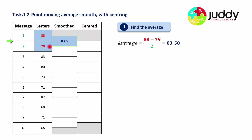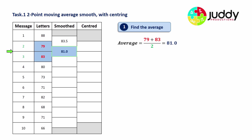We take two bits of data from message one and message two and average them: 88 plus 79 divided by 2 equals 83.5. That value is aligned in the middle between message one and two. We then move down one and average message two and three, which is 79 plus 83 divided by 2.